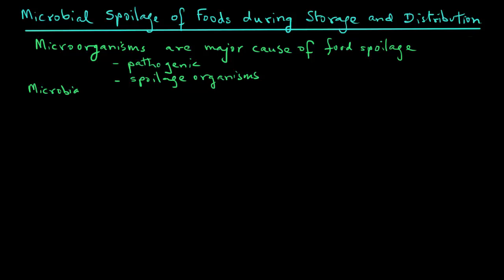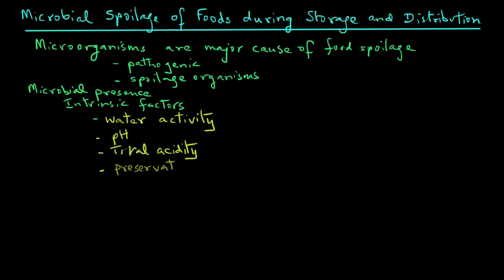The microbial presence in a food is dependent on a number of factors. Let's look first at the intrinsic factors. These are factors that are intrinsic to the food product, and those factors include water activity, pH, total acidity, whether some type of preservative is used or not, and what type of nutrients are present in the food.